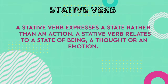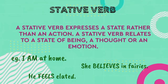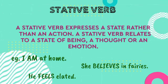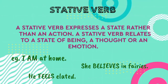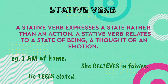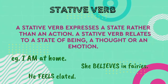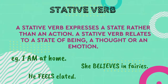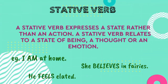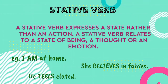Stative verb. A stative verb expresses a state rather than an action. A stative verb relates to a state of being, a thought, or an emotion. Stative verb kisi action ko nahi, kisi cheez ki state ko darshata hai. Stative verb kisi ke hone, kisi ki soj, ya kisi ke emotion ko patata hai. For example, I am at home — am is a stative verb as it shows state of being. She believes in fairies — believes is a stative verb as it shows a thought. He feels elated — feels is a stative verb as it shows the emotion of a person.